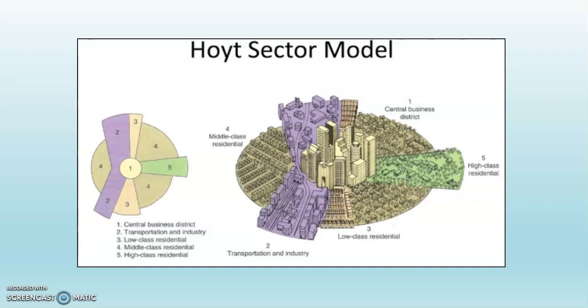Urban areas or urban regions, like suburbs or industrial zones, stretch outward from the CBD. They don't encircle it the way they did with the concentric zone model. Hoyt's reasoning was that like landscapes — similar landscapes — would remain the same as distance was increased from the CBD.